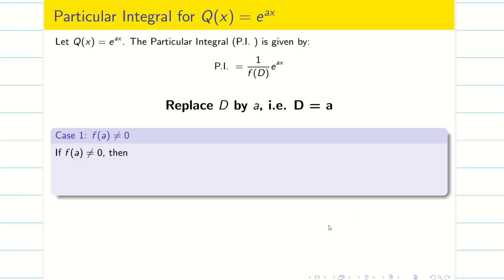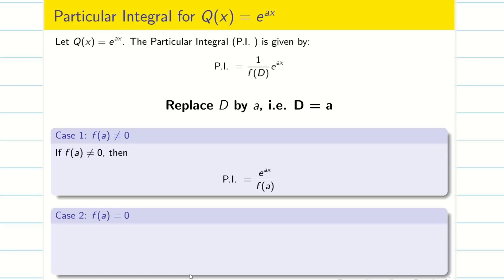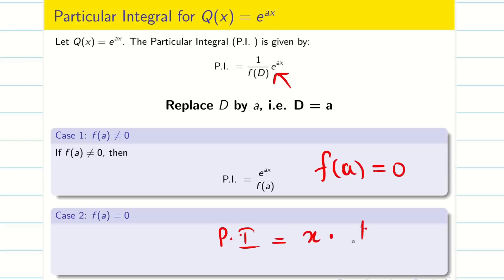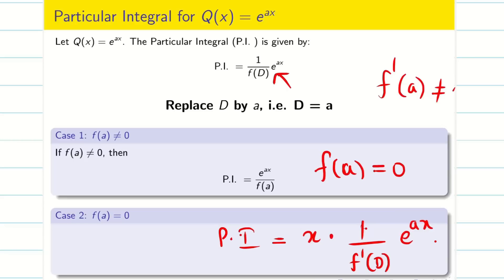That is Case 1: if f(a) ≠ 0, then PI = e^(ax) / f(a). Case 2: when we substitute D = a, sometimes f(a) may be zero. In this situation the formula fails because 1/0 becomes infinity. In this case we must pre-multiply by x and then differentiate the denominator alone with respect to D, giving f′(D), and then substitute a to get f′(a). If f′(a) ≠ 0 the solution is complete. If f′(a) = 0 we continue the procedure for f″(a), repeating until we get a non-zero value.